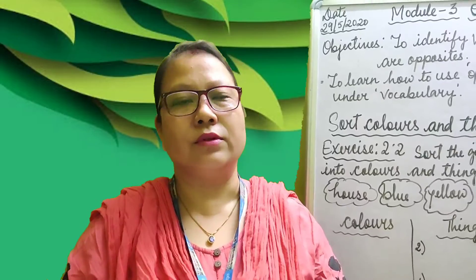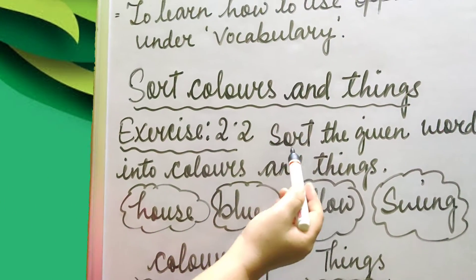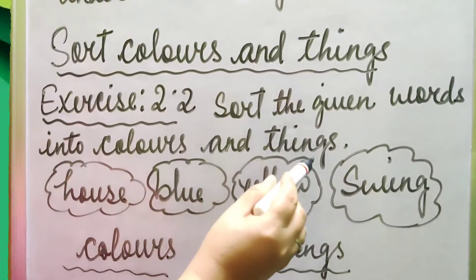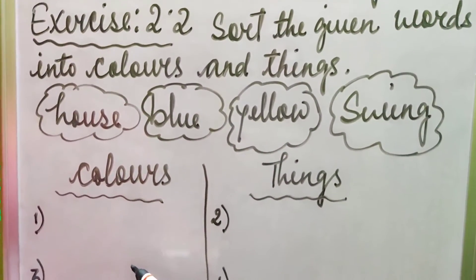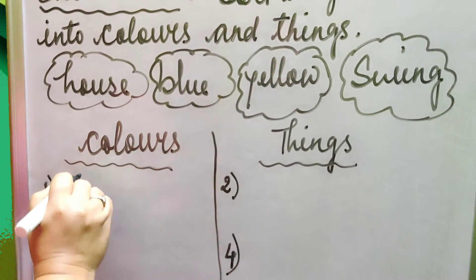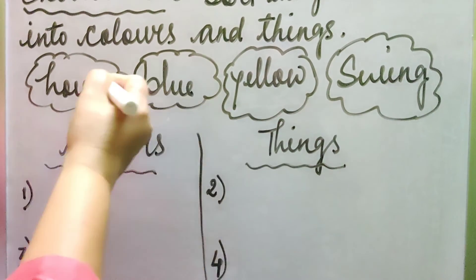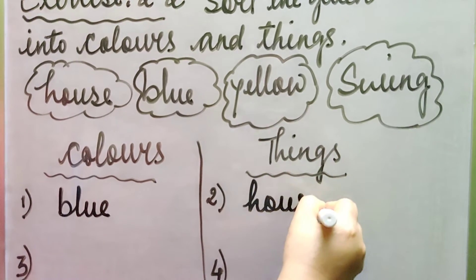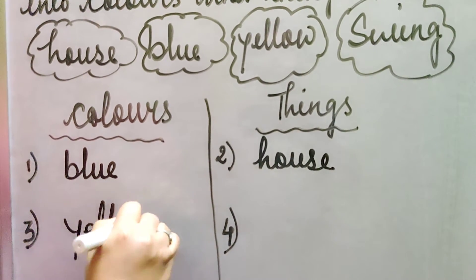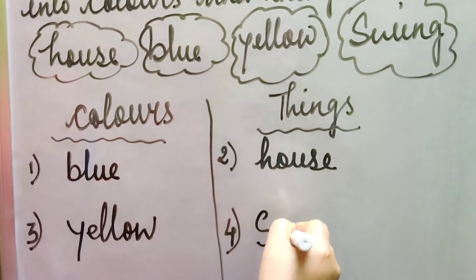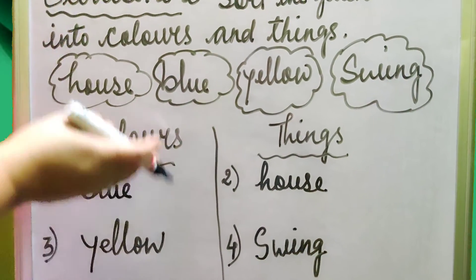We will do sorting colors and things, exercise 2.2. Sort the given words into colors and things. The words are: house, blue, yellow, swing. In colors we write: blue — B-L-U-E; yellow — Y-E-L-L-O-W. In things we write: house; swing — S-W-I-N-G. Note it down in your workbook, exercise 2.2.